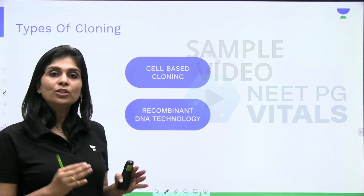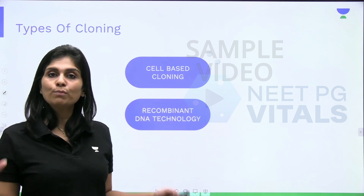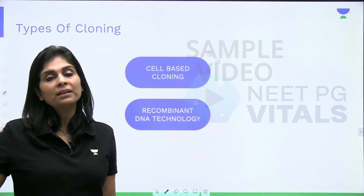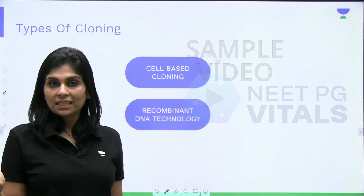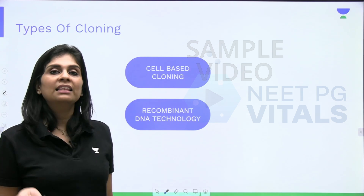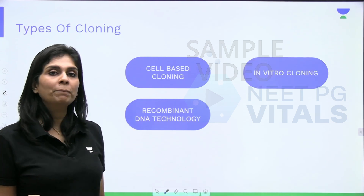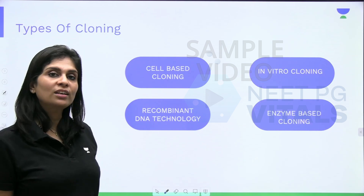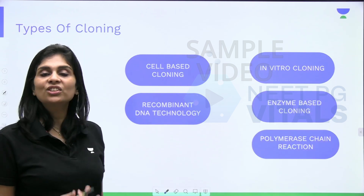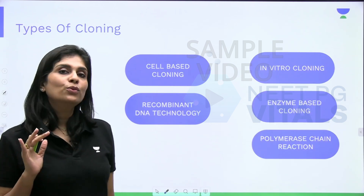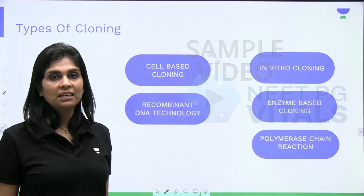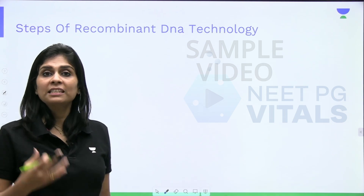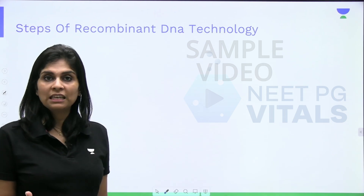Instead of a whole living cell, if you take a small test tube and allow the replication to happen in the tube outside the cell, then that is called in vitro cloning or enzyme-based cloning, otherwise called polymerase chain reaction. So now about recombinant DNA technology — I want you to follow the steps involved.